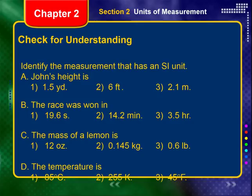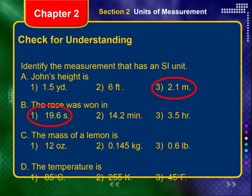Now identify the measurement that has an SI unit — not metric, not imperial, but SI. Johnny's height: the SI unit is meters. A race being timed: the SI unit is seconds. Mass in the SI system — here's a tricky one — kilograms. And temperature in the SI system: Kelvins.